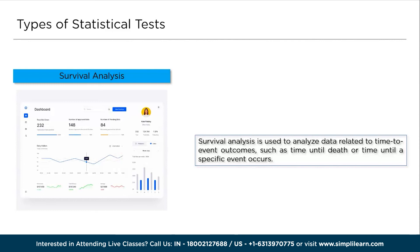Survival analysis is used to estimate the survival probability over time, a log-rank test to compare survival curves between groups, and Cox proportional hazards regression to assess the effect of covariates on survival. This analysis accounts for censoring, which occurs when some individuals do not experience the event by the end of the study, providing valuable insights into the probability and timing of events of interest.